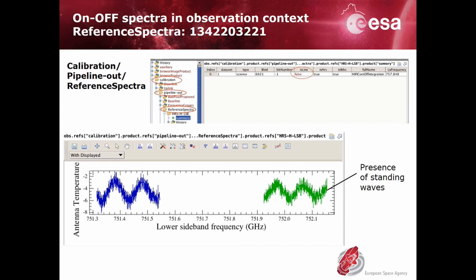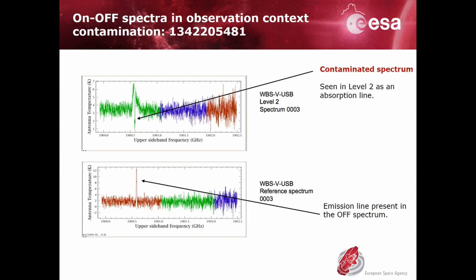Therefore, it is recommended to correct the Off spectra for standing waves and baseline drift, just as it is justified to correct the Level 2 data. As an example, we show in the lower panel the chop position of this observation being affected by contamination. The result is seen in the upper panel where the Level 2 data features what resembles an absorption line exactly at the frequency of the narrow emission line in the Off spectrum. This is in fact the result of the on-minus-off scheme and reveals that this negative dip is in reality an off-source contamination rather than a genuine line absorption component.